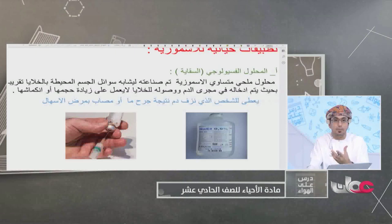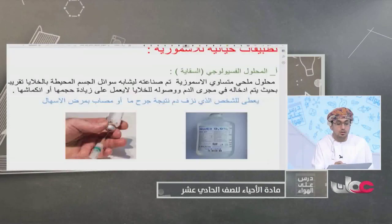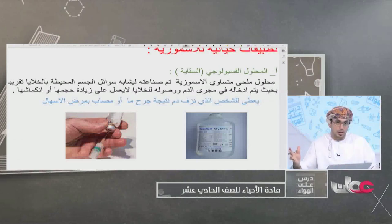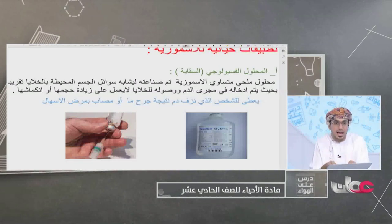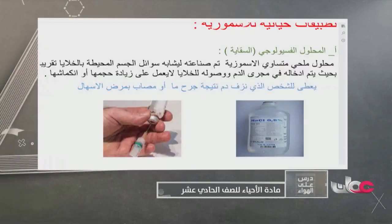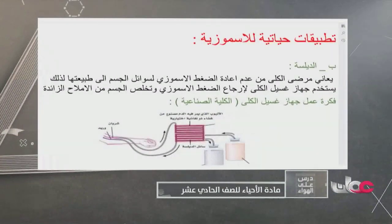المحلول الفسيولوجي هو محلول ملحي متساوي الإسموزية، صُنع ليُشابه سوائل الجسم المحيطة بالخلايا، بحيث يُدخل في مجرى الدم. عند وصوله إلى الخلايا لن يُحدث انتفاخاً كبيراً ولا انكماشاً، وإنما يُعيد للخلايا حيويتها. يُعطى للشخص الذي نزف دماً نتيجة جرح، أو المصاب بالإسهال أو التقيؤ.